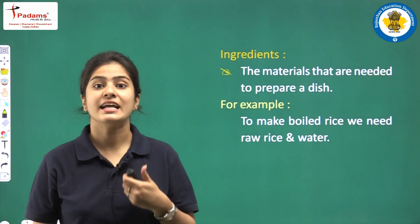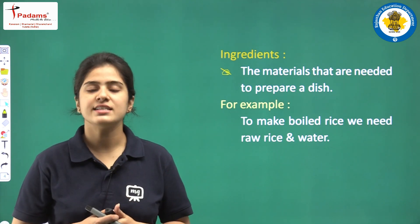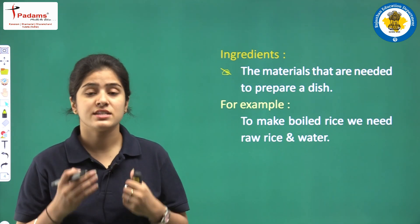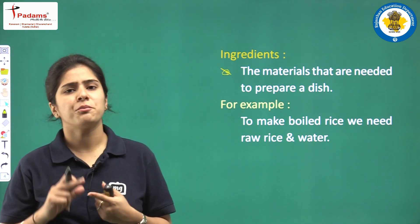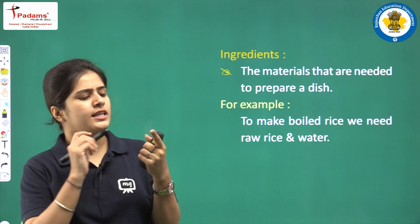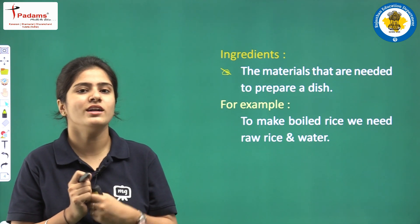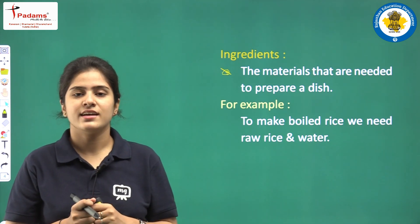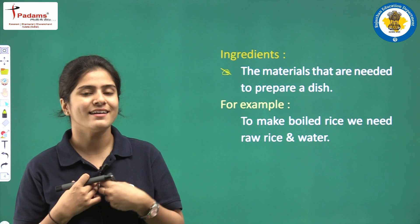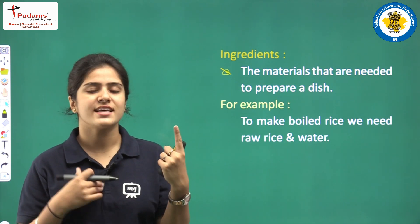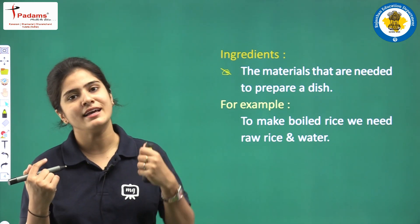Now we are discussing about ingredients. Ingredients are the food items or materials that we require for preparing a dish. When you are preparing a dish, think about what materials you will be using for making that particular thing — those materials are called ingredients. For example, if I have to make boiled rice, I will need raw rice and water, and with these two materials I can easily make boiled rice.